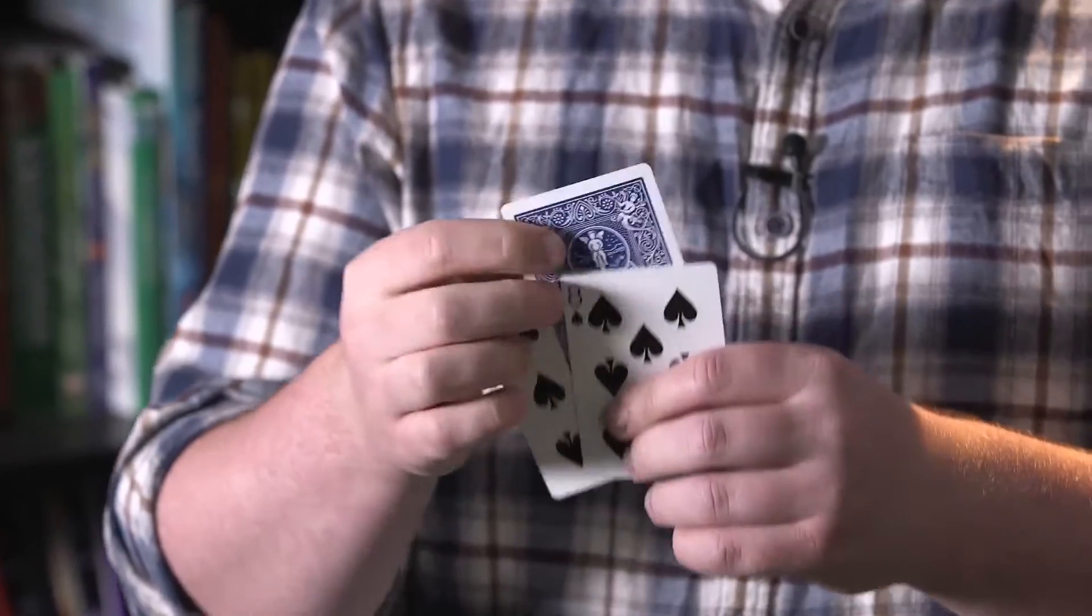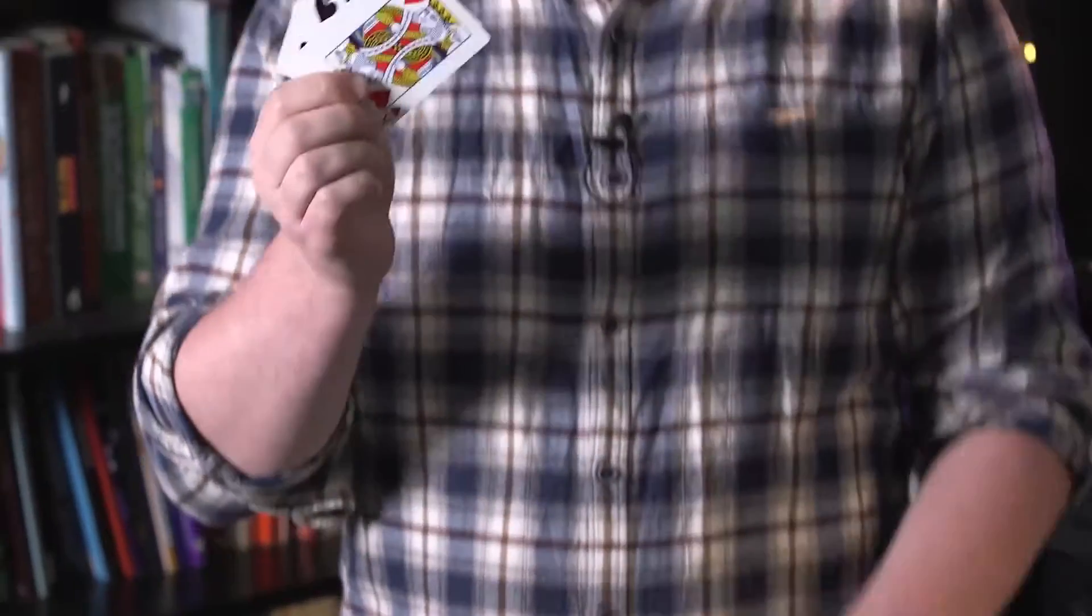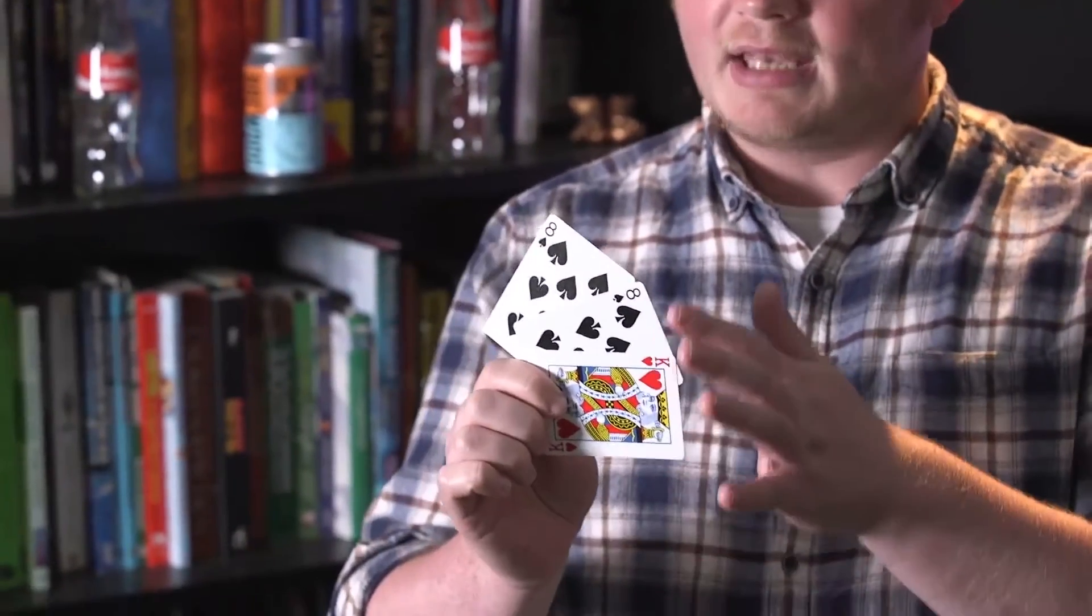Now, you could be forgiven for thinking that there isn't a winning card. You've taken it all on blind faith so far. But there is. It's the king that you're looking for. And the king couldn't be any more different from the eights, so it really should be easy to keep track of.